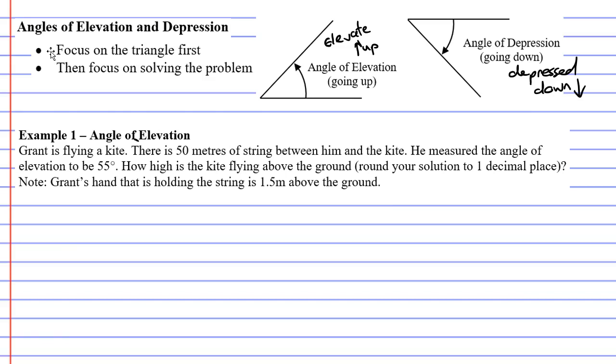The first dot point is to focus on the triangle first—to be more specific, on the right angle triangle. Then it wants you to focus on solving the problem. So don't get too worried about the problem until you've been able to figure out what the triangle looks like first.